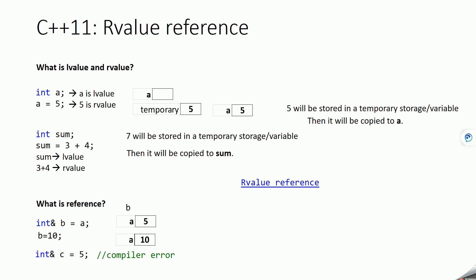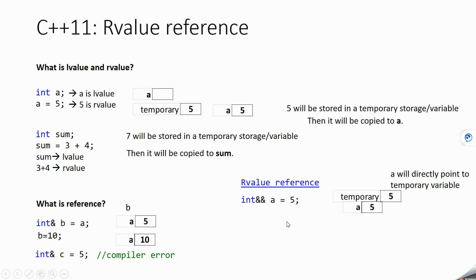So now let's see what exactly an r-value reference means. An r-value reference means you can point to an r-value — basically you can create a reference to a temporary storage. The r-value reference is denoted by double ampersand `&&`. In this case, `a` will point to the temporary storage created for 5. Similarly, `sum` will be an r-value reference to the temporary storage allocated for `3 + 7`.